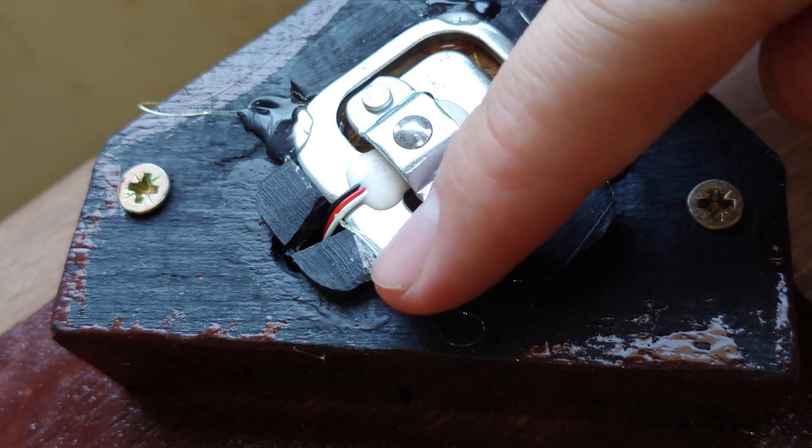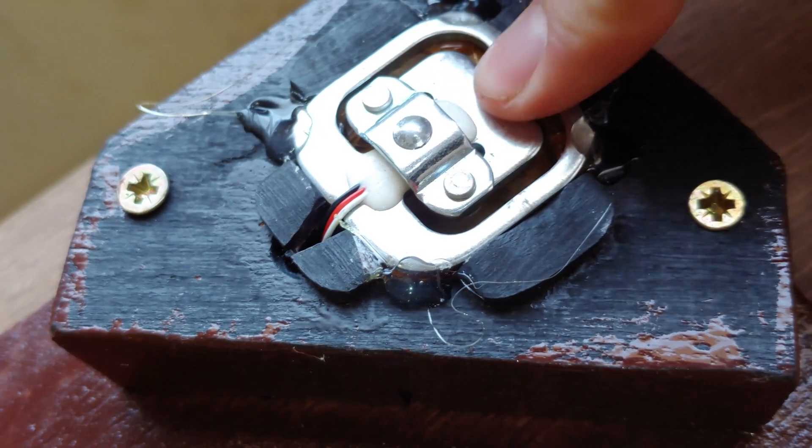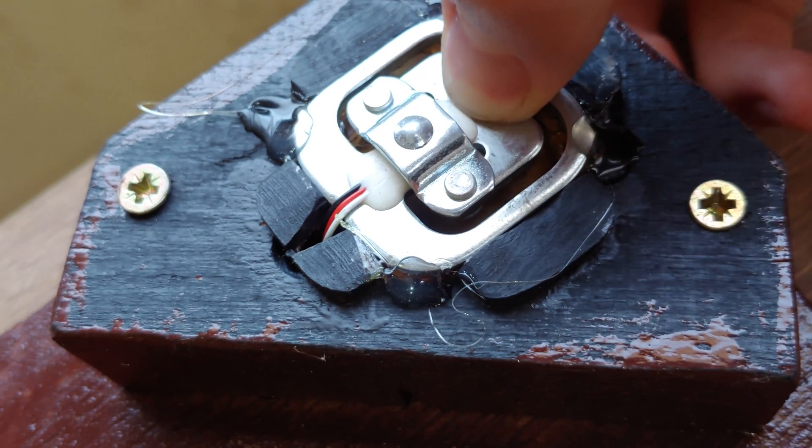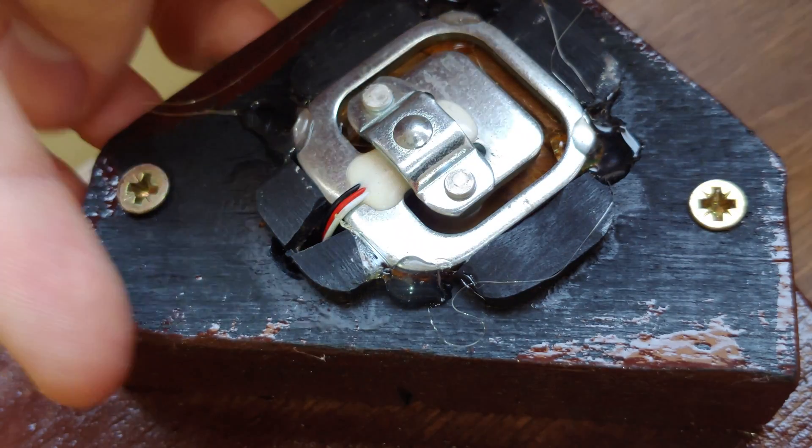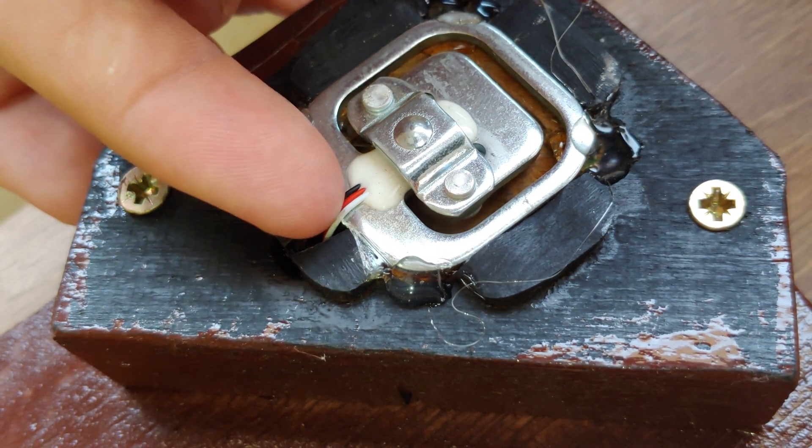First, you should determine which pair of wires have the highest resistance between them. You can do this with a multimeter. In my case, those were the black and white cables in each cell. I'll be using those colors as reference, but remember that yours might be different.